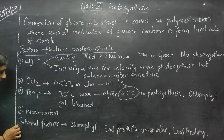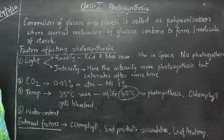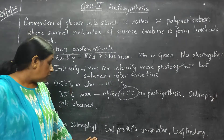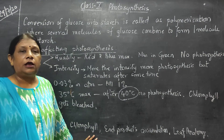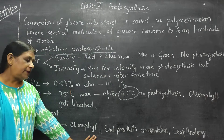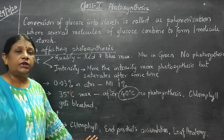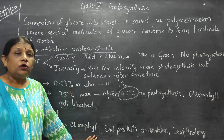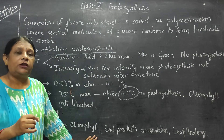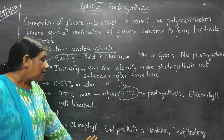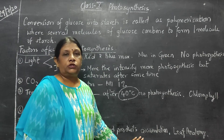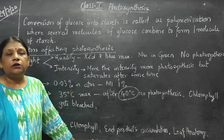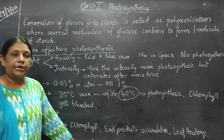Now, what are the internal factors that affect photosynthesis? First is chlorophyll. Plants which are green in color have maximum photosynthesis. But if they have green patches only — you can see many leaves with green and yellow patches — the level of photosynthesis will decrease as the level of chlorophyll decreases. Second comes end product accumulation. If the end products are already accumulated in the cells, then also no more photosynthesis will take place.